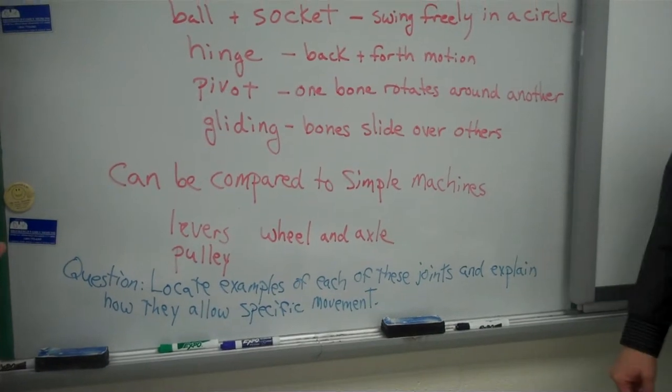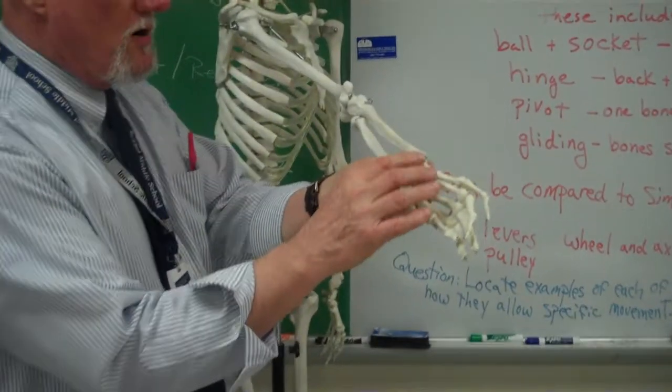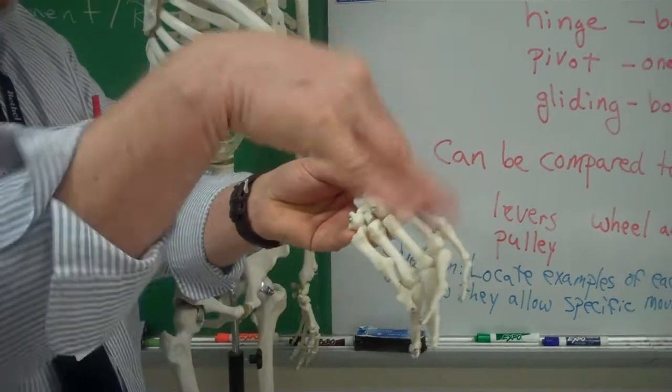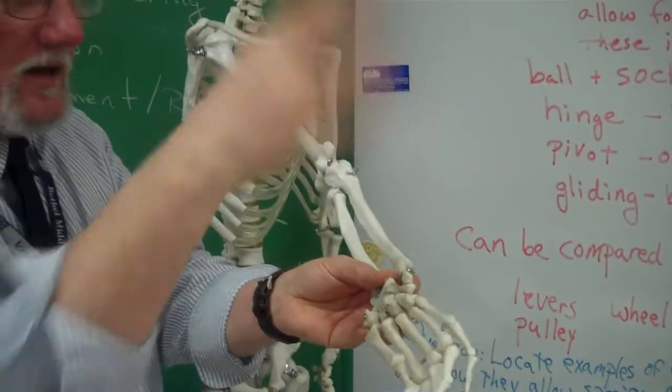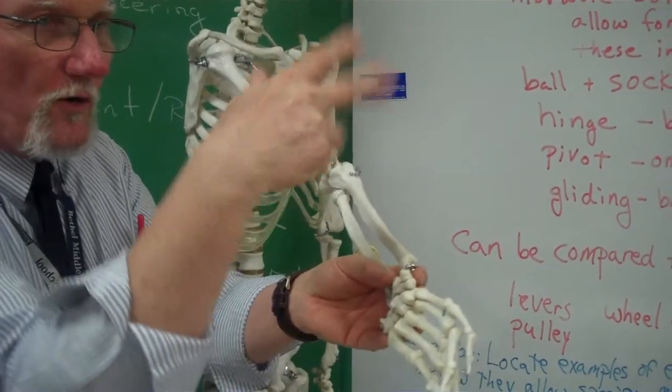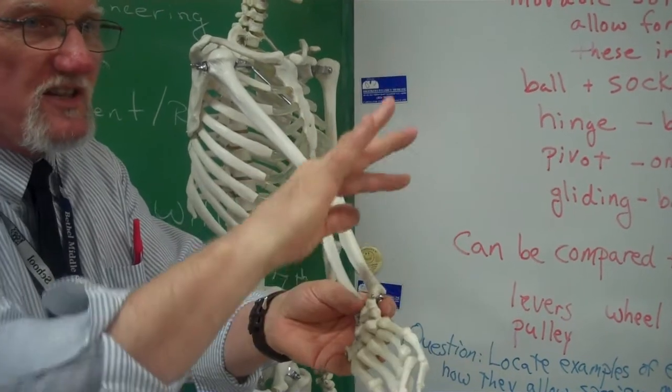Gliding joint, for example, would be all of the bones that are in our wrist. And for us to make this kind of a motion, the bones have to glide over each other to make a nice smooth motion.